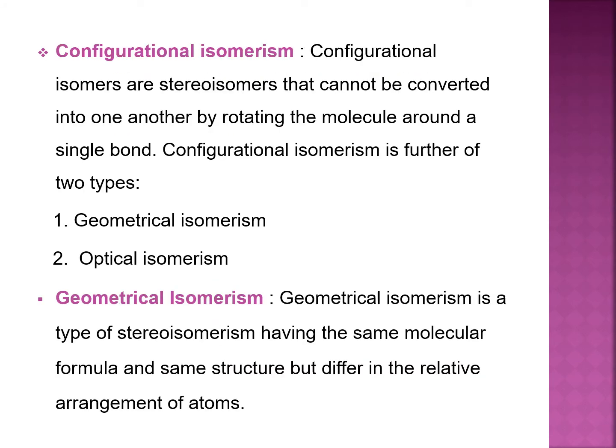The second type is configurational isomerism. Configurational isomers are stereoisomers that cannot be converted into one another by rotating the molecule around a single bond. Configurational isomerism is further of two types: geometrical isomerism and optical isomerism. Geometrical isomerism, also called cis-trans isomerism, is a type of stereoisomerism having the same molecular formula and same structure but differing in the relative arrangement of atoms.